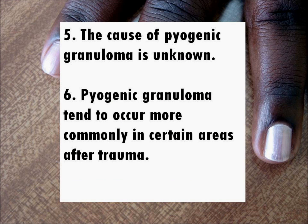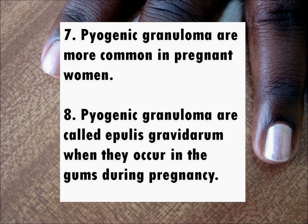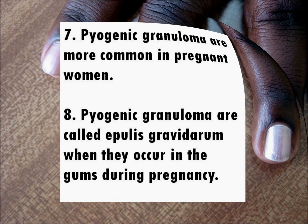7. Pyogenic granuloma are more common in pregnant women. 8. Pyogenic granuloma are called epulis gravidarum when they occur in the gums during pregnancy.